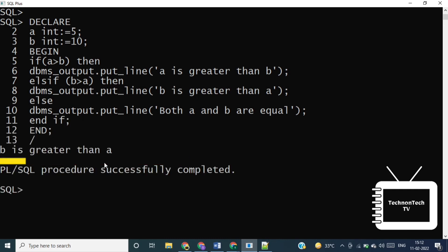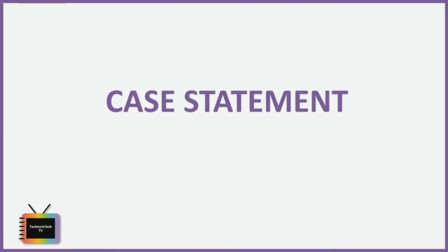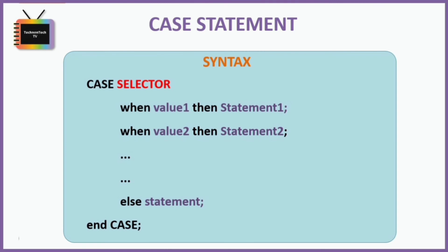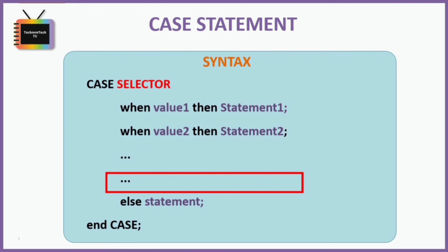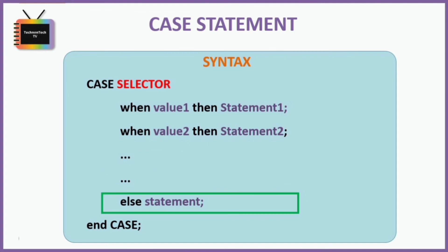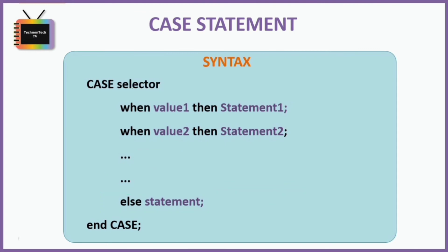Next is the CASE statement. In one line: it means 'one out of many'. It is a decision making statement that selects only one option out of multiple available options. It uses a selector for this purpose — the selector can be a variable, function, or procedure that returns some value. Based on the result, one of the CASE branches is executed. If all cases fail, the ELSE case is executed.